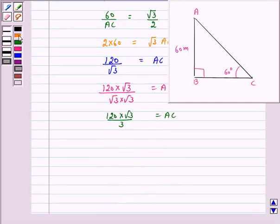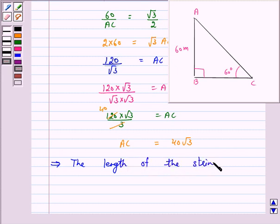So on cancellation we have AC is equal to 40 root 3. This implies the length of the string is 40 root 3 meters.